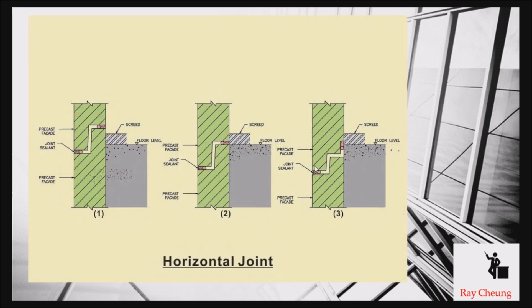Before we start, if you are the architect, you need to understand how to make it waterproof. First, you need to provide a so-called horizontal joint. You can see there are three types of joints: one is above the screen, one is below the screen, and the third one should be the best.